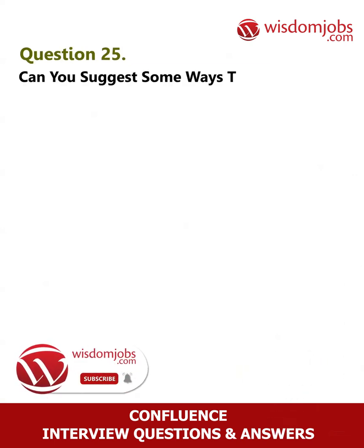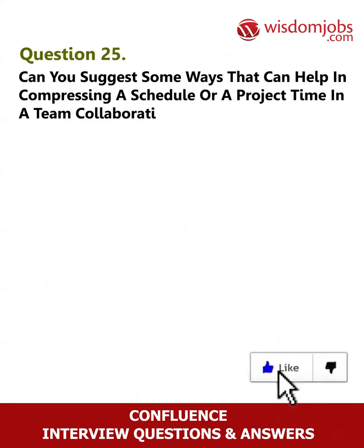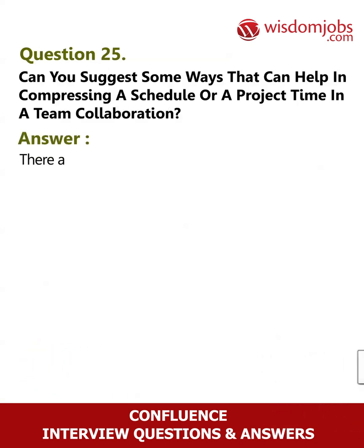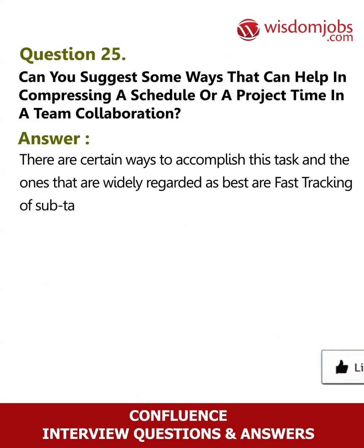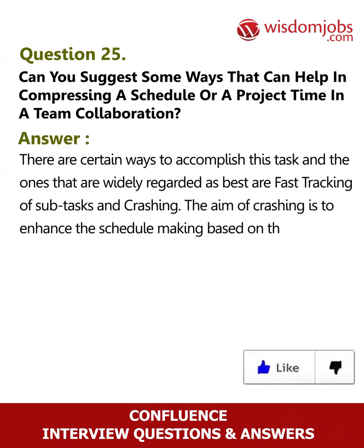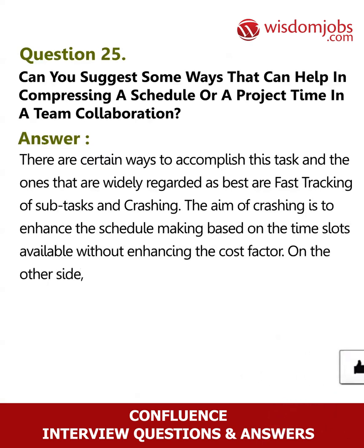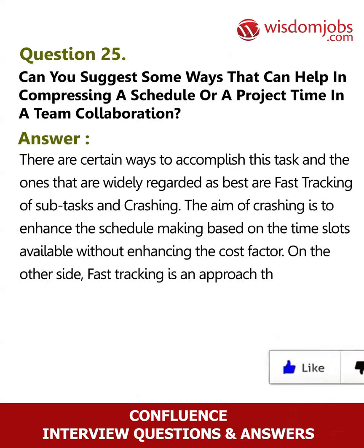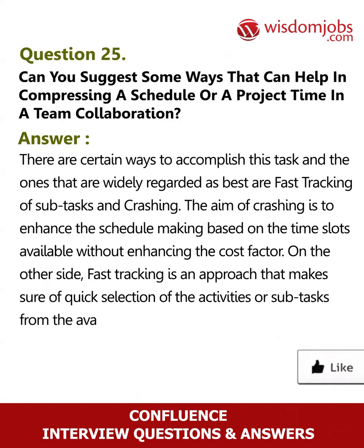Question 25: Can you suggest some ways that can help in compressing a schedule or project time in team collaboration? Answer: There are certain ways to accomplish this task; the ones widely regarded as best are fast tracking of subtasks and crashing. The aim of crashing is to enhance the schedule based on available time slots without enhancing the cost factor. Fast tracking is an approach that ensures quick selection of activities or subtasks from available options to assure quality outcomes.